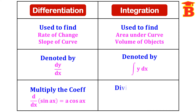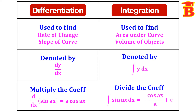Whereas in integration, we have to divide the coefficient. So, integrating the same function — integral of sin(ax) dx — the result is minus cos(ax) divided by a. We have to divide the coefficient a. And in integration, we also have to write plus C.